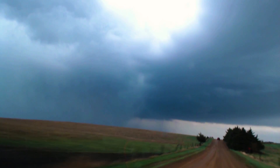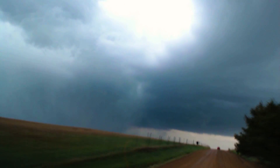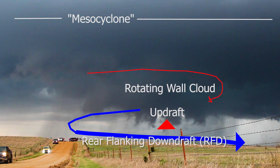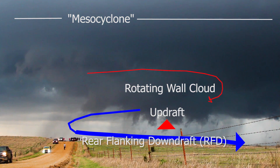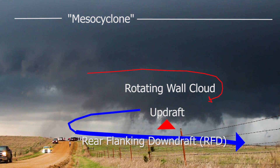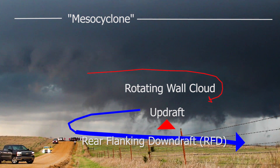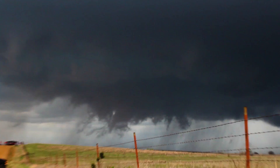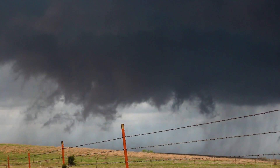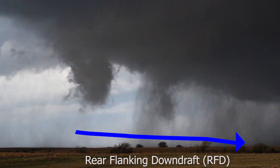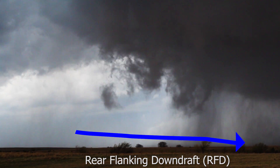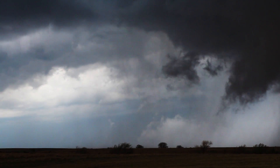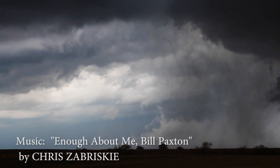First, you need a supercell thunderstorm. In the northern hemisphere, the left rear or southwestern corner of a supercell thunderstorm is the updraft, or the storm's intake. Below the updraft, a wall cloud forms as the condensation layer drops in altitude, thanks to drawing slightly cooler moist air from the nearby rainfall north of the updraft. In more powerful supercells, this wall cloud rotates as the storm ingests air.